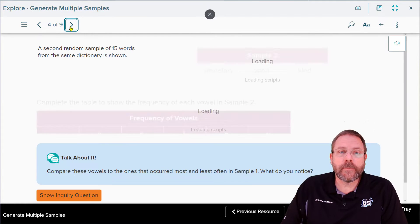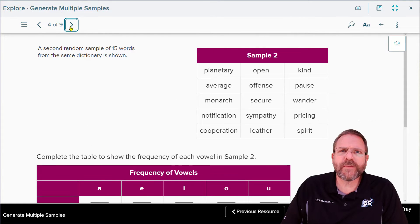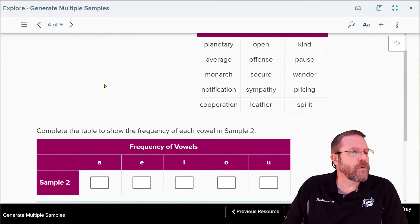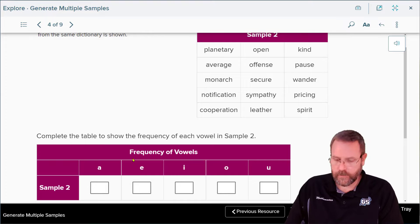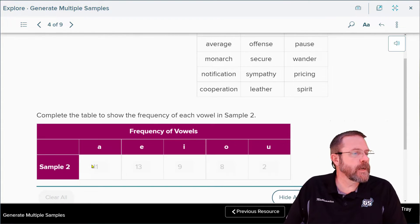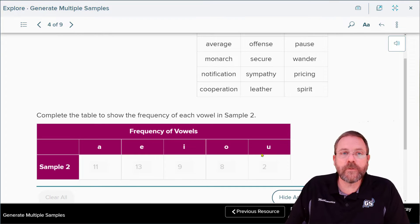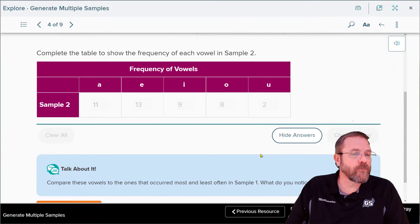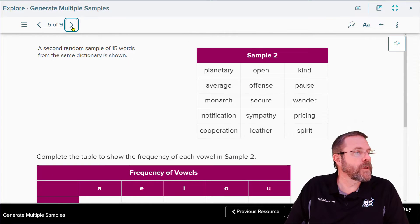So that gave us a set of data, a random sample of each of these letters to find out how often they occurred. Now we're going to do it again, because one sample, that's probably not enough to get a good base of all of our data. On this set of data, we found that A occurred 11 times, E occurred 13 times, I occurred 9 times, O occurred 8 times, and U occurred 2 times. That is a totally different set of information than we got with our first set of data.